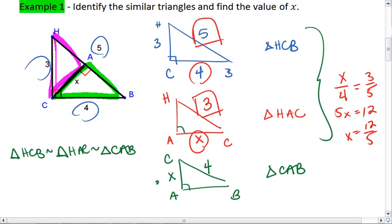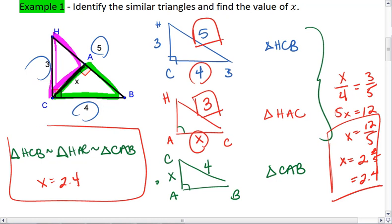Thus, we see that X equals 12 fifths, or if you want to, you can write this as 2 and 2 fifths, or 2.4. Either way, all of these answers are right. And there's my final solution.